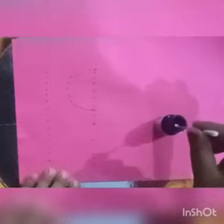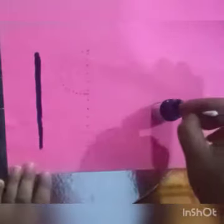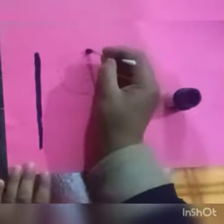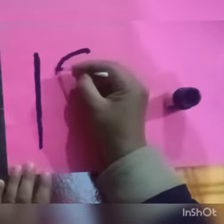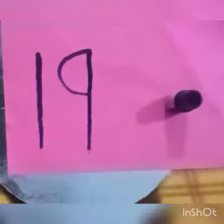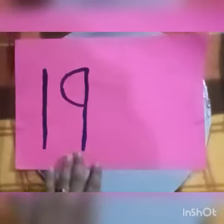Dear learners, our next activity is tracing number 19. We will dip an earbud in the color, then we will trace the number 19 with the help of the earbud. First, trace number 1 — make a curve — then a standing line. This is number 19.